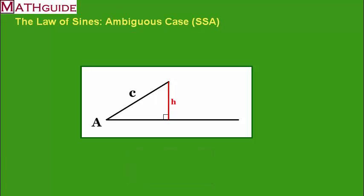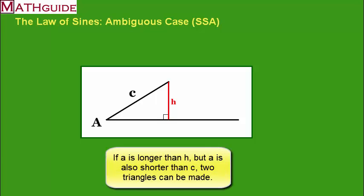If a is somehow larger than h, but smaller than c, then we've got a situation. What it could do, if we swing the segment just to the left, we can make one triangle. If we swing a to the right, we can make another triangle. So when little a is larger than h, but smaller than c, you can make two triangles.